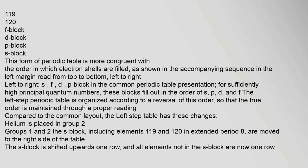In the left-step periodic table, the blocks fill out in the order of S, P, D, and F. For sufficiently high principal quantum numbers, the left-step periodic table is organized according to a reversal of this order so that the true order is maintained through proper reading. Compared to the common layout, the left-step table places helium in group 2, and groups 1 and 2 — the S-block, including elements 119 and 120 in extended period 8 — are moved to the right side of the table. The S-block is shifted upwards one row.